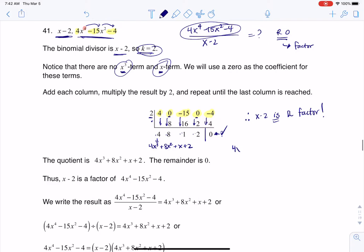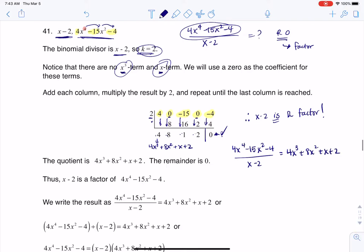Or another way of saying that is you can say 4x to the 4th minus 15x squared minus 4 in ratio to x minus 2. That quotient is 4x cubed plus 8x squared plus x plus 2. That's one way to write it.